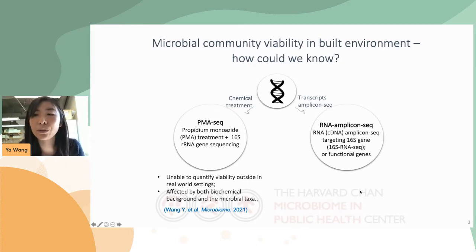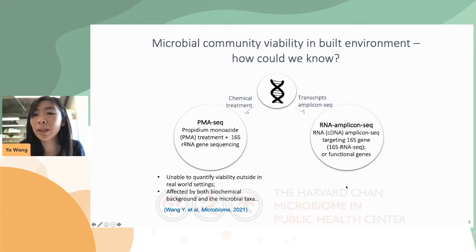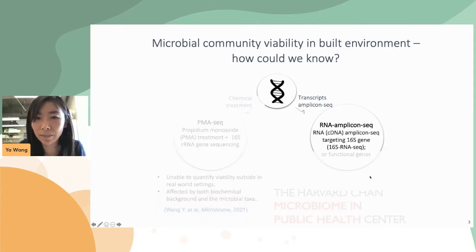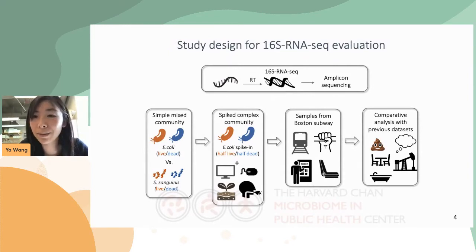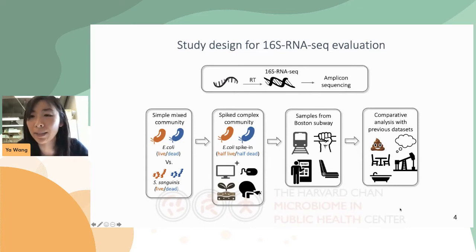Since the chemical-based approach may not always be reliable in real-world settings, we started looking at another commonly used viability assay: RNA amplicon sequencing. We first validated the RNA-based method using ribosomal RNA transcribed from the 16S genes as viability markers — the 16S RNA-seq. It is worth noting that 16S RNA-seq is different from conventional 16S amplicon sequencing, which amplifies DNA extracted from the whole community. Here, the amplicons were generated from cDNA templates reverse transcribed from the RNA of the 16S genes.